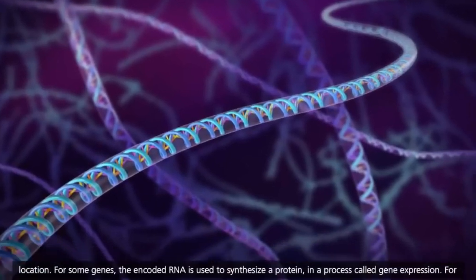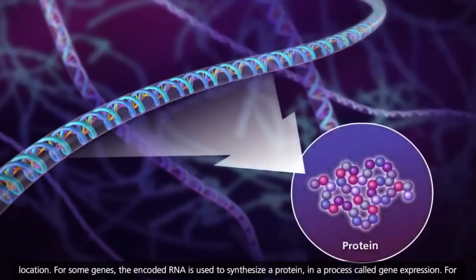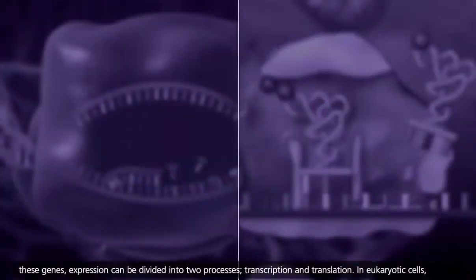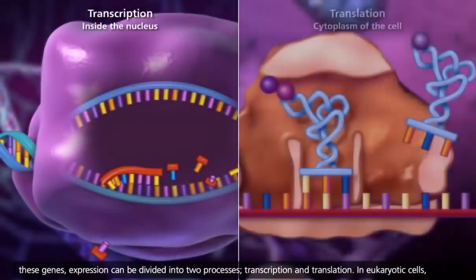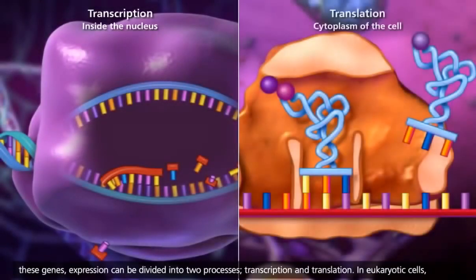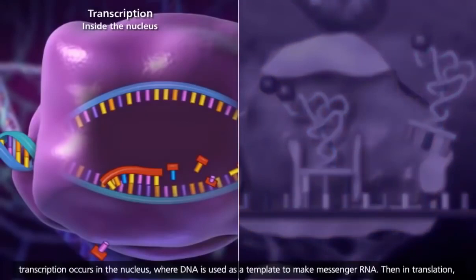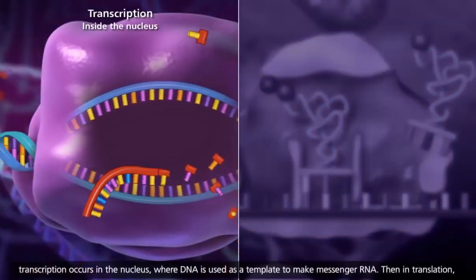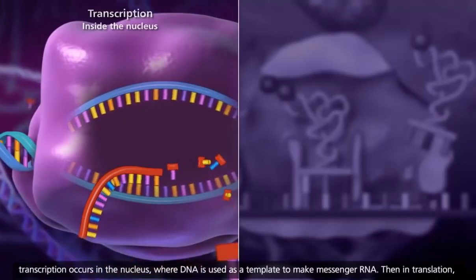For some genes, the encoded RNA is used to synthesize a protein in a process called gene expression. For these genes, expression can be divided into two processes, transcription and translation. In eukaryotic cells, transcription occurs in the nucleus, where DNA is used as a template to make messenger RNA.